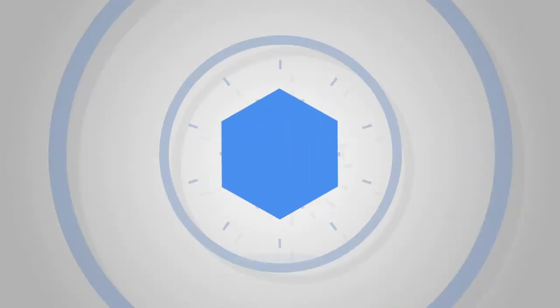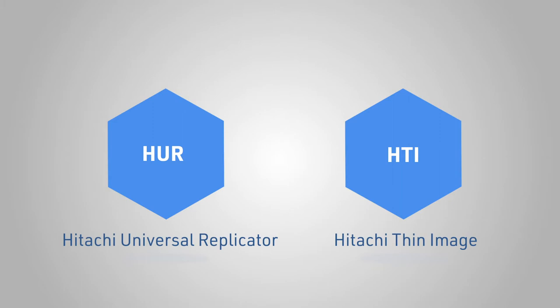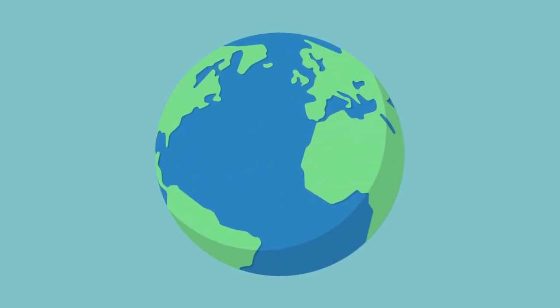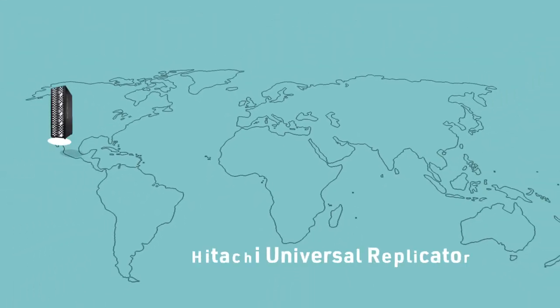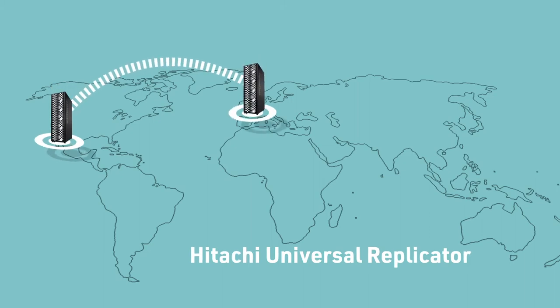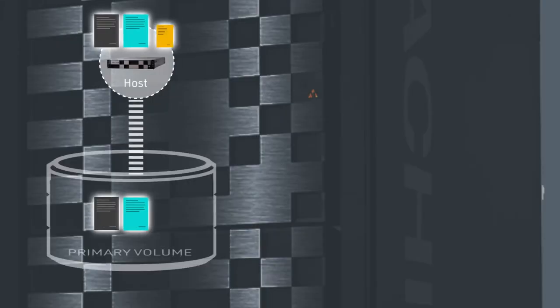This video describes data protection solutions in which data volumes are shared by Hitachi Universal Replicator (HUR) and Hitachi Thin Image (HTI). Hitachi offers both remote and in-system replication solutions. The Universal Replicator asynchronous remote replication product replicates data between storage systems at different sites. The Thin Image and System Replication product enables you to generate and store point-in-time copies of data within a storage system.